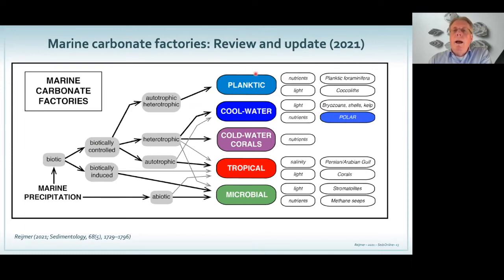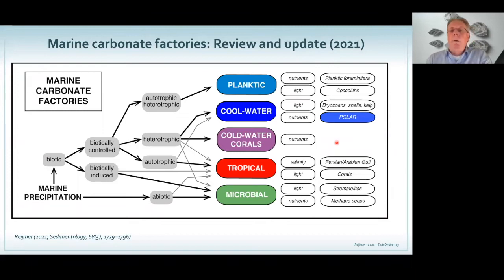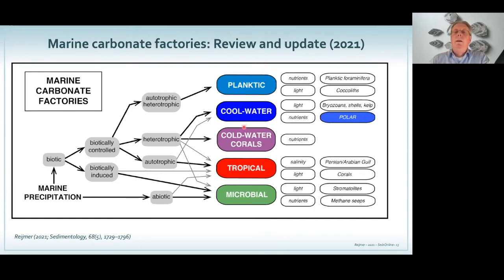The same holds for the cool water — light or nutrients — and even when you go to polar regions, you can get a subdivision of your cool water. I stick to the main colors, with all the little variations producing little variations within the system. It's like the type of cheese you buy — French cheese has a lot of varieties and everybody knows it's French cheese. It can have a different taste. The microbes, the tropics, the cool water corals, the cool water, and the planktic ones — they all produce carbonates, but they have a different taste.